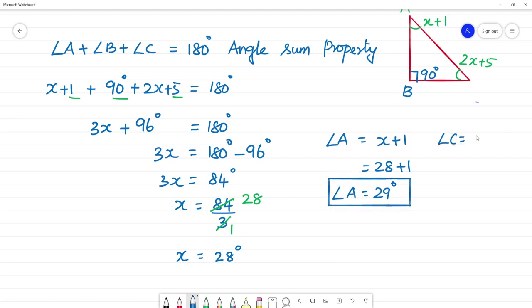Angle C is 2x plus 5. 2 into 28 plus 5. 2 times 8 is 16, remainder 1 is 56 plus 5. That means angle C is 61 degree.